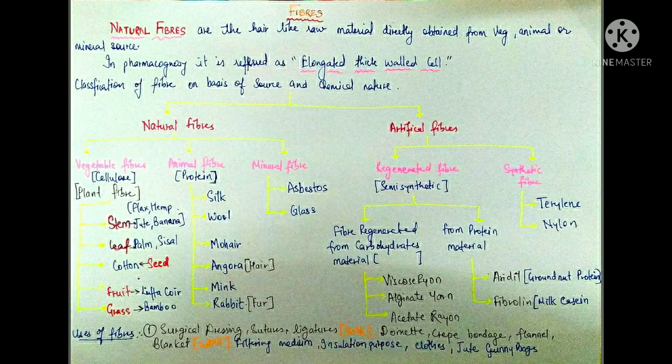After seeing the classification of natural fibers, let's move to the uses of fibers. The basic use of fibers is for clothing. Other uses include preparation of surgical dressings, sutures, and ligatures, which are made from silk and used during surgical operations for sewing purposes. Fibers are also used for making gunny bags from jute, insulation purposes, filtering mediums, and blankets from wool.